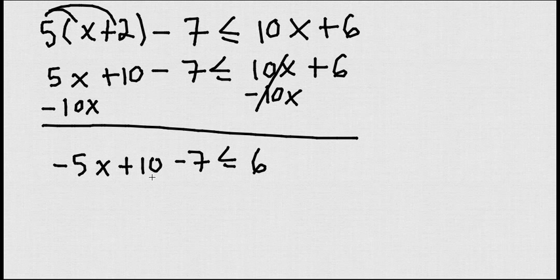Now, I can go ahead and group this 10 minus 7, which is going to be 3. So now I have negative 5x plus 3, lesser equals than 6.